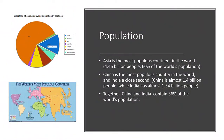Asia is the most populous continent in the world. It has 4.46 billion people. Roughly 60% of the world's population live in Asia. You can see that in the pie graph up above, where Africa — the next largest continent — has 14% of the world's population. And Antarctica, no one lives there, so that's why they just put that little sliver in there.